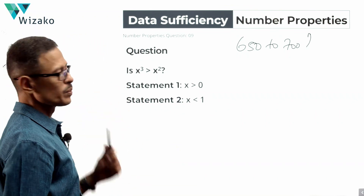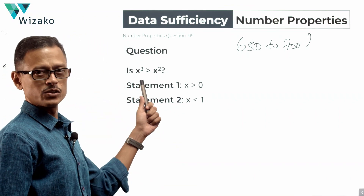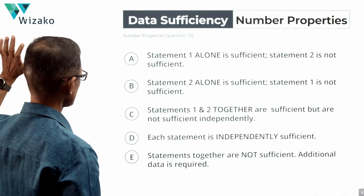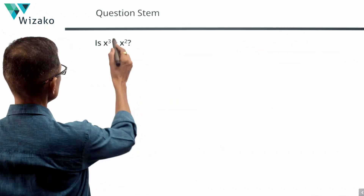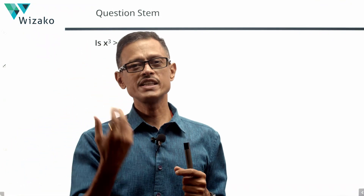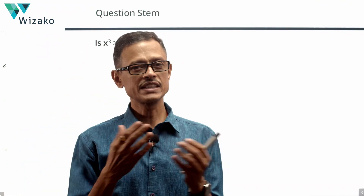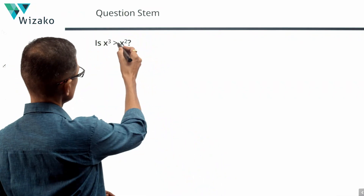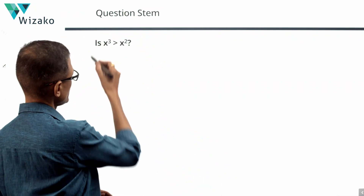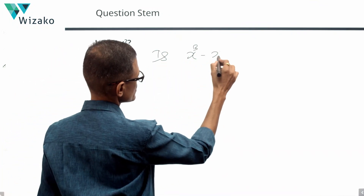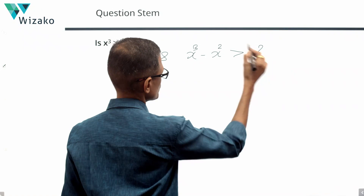The question is: Is X cubed greater than X squared? Two statements follow the question. Let's spend some time on the question stem and reframe it so it becomes easier to evaluate when we look at the statements. Is X cubed greater than X squared? I'm going to take X squared to the left-hand side, making it: Is X cubed minus X squared greater than 0?